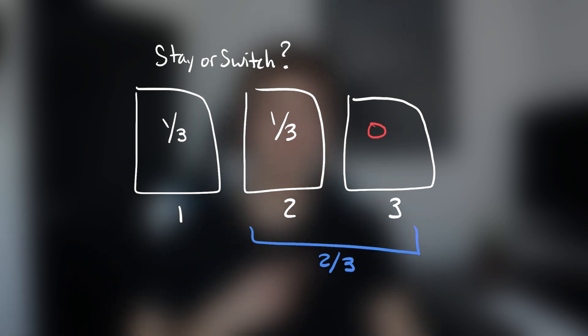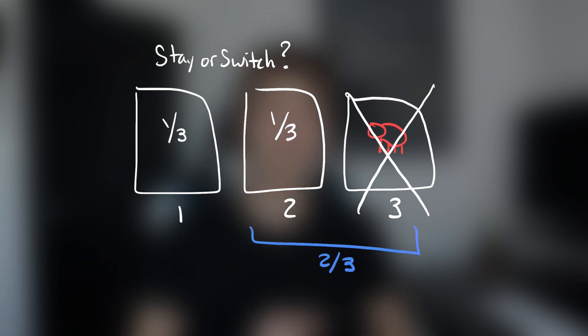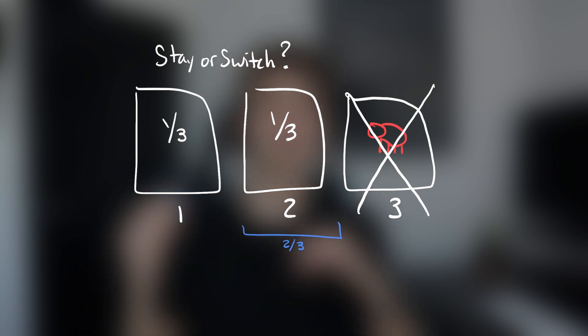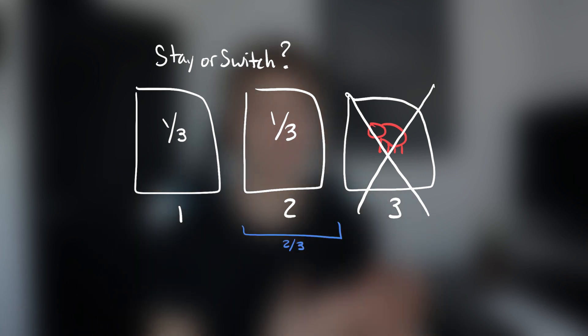Right when the host opens one of the doors and reveals a goat, the odds are changed. The probability of the winning door being the one that he didn't open now receives that 2 out of 3 chance, and that's because the host always opens a door that contains a goat.